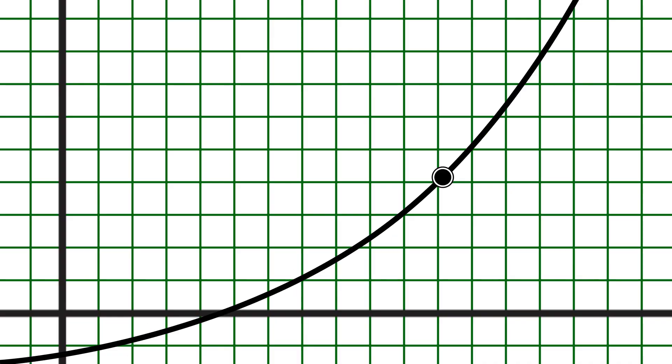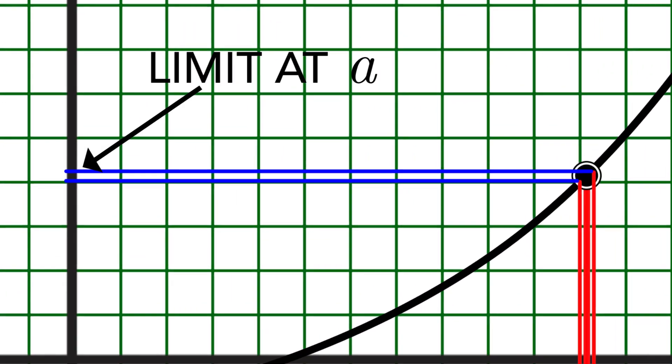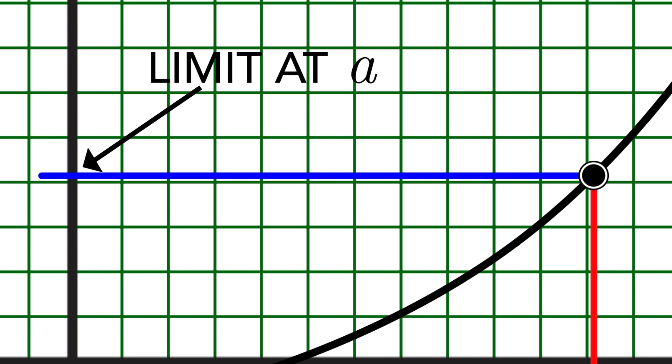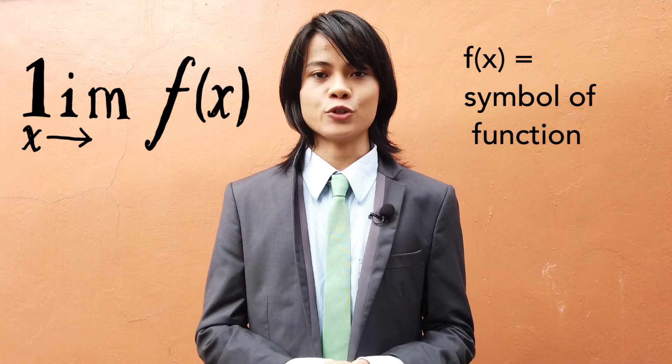A limit is a number on the y axis. If, as the x values approach a from both sides, the graph also appears to meet at a particular y value, then that is the limit of the function. The limit of f of x, the function, as x approaches a.